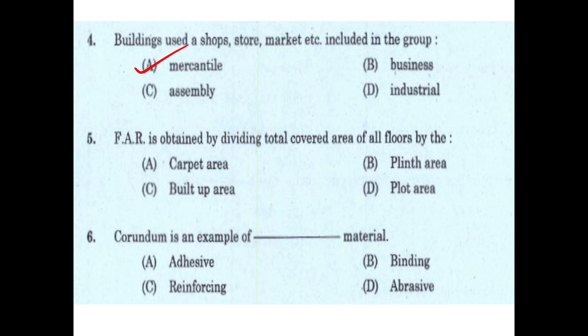FAR — floor area ratio — is obtained by dividing the total covered area of all floors by the plot area. Options are: carpet area, plinth area, built-up area, or plot area. The answer is option D, plot area.